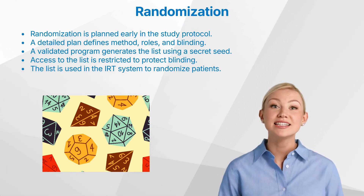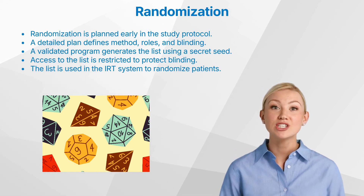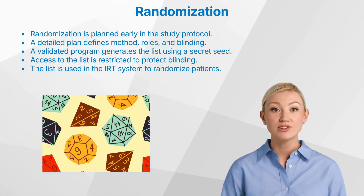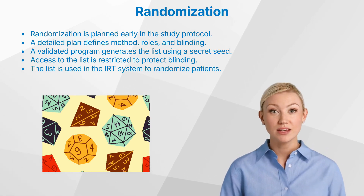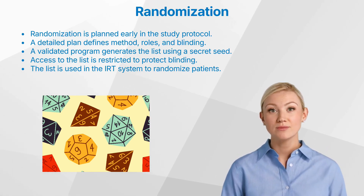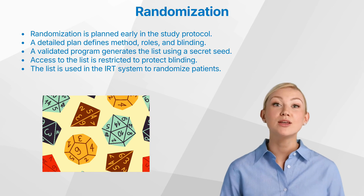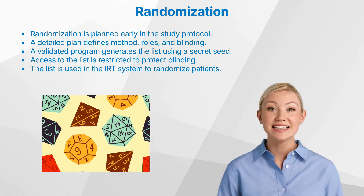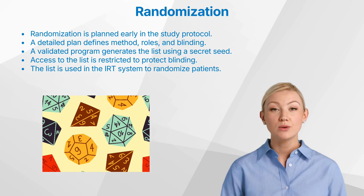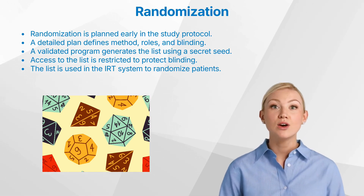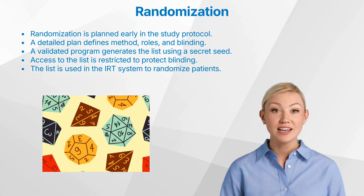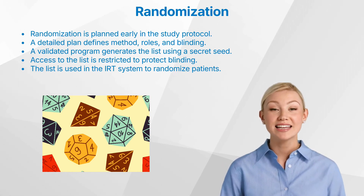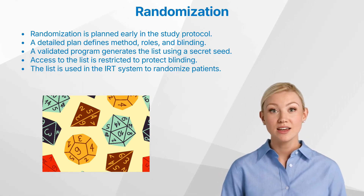The randomization list itself includes a randomization number for each subject, the assigned treatment, possibly the site number if stratified, and in the case of a block randomization algorithm, block identifiers. The randomization number will appear on the labels of the study medication to ensure each box is correctly linked to the intended patient. Access to this list is restricted to the statistician who created the final list, the data manager or IRT administrator, and the labeling vendor.